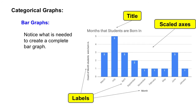Another thing that we need to make sure we include is labels. So we're going to label both our x and our y-axis. In this case we're labeling the x-axis the months of the year, and then we are labeling the y-axis the counts, or the number of students who were born in each month.